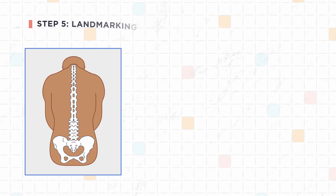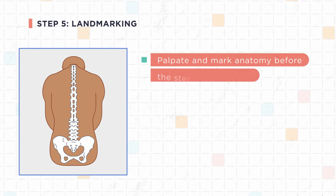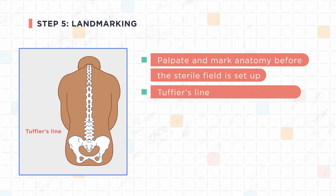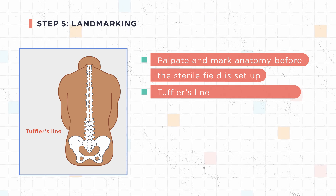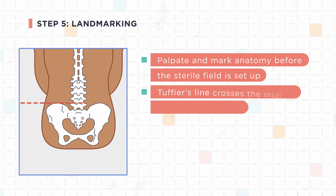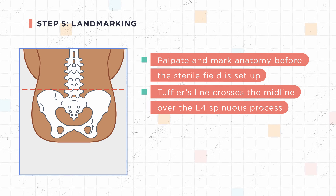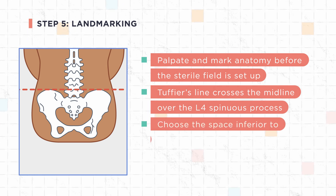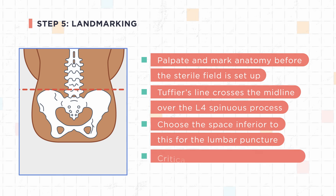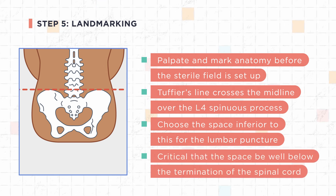Step 5: Landmarking. Palpate and mark anatomy before the sterile field is set up. Tuffier's line, which joins the most superior aspect of both iliac crests, crosses the midline over the L4 spinous process. Choose the space inferior to this for the lumbar puncture. It is critical that the space be well below the termination of the spinal cord.